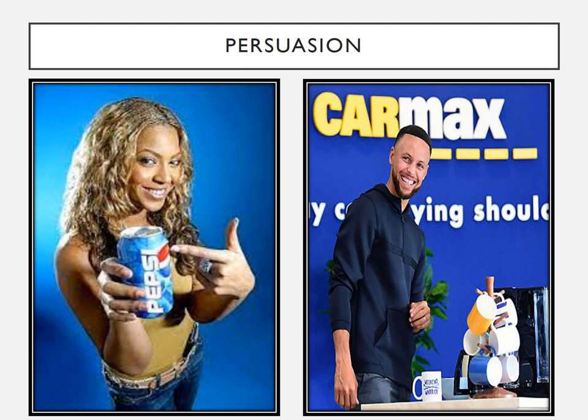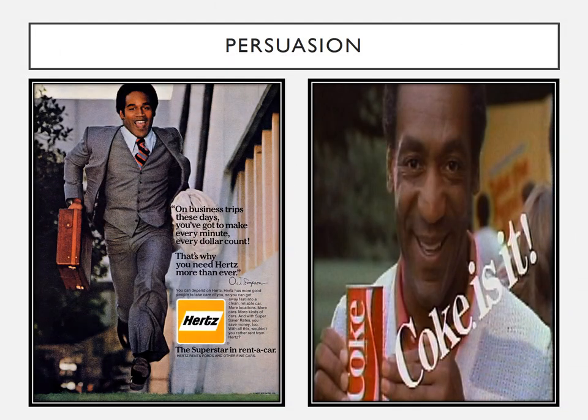There is actually a company that calculates what they call a 'Q score' — a measurement of how likable a celebrity is — and advertisers use these scores to choose spokespeople. Of course, likability can change dramatically. When I was growing up, two of the most beloved celebrities were Heisman Trophy winner O.J. Simpson and comedian Bill Cosby, who were spokespeople for many products. However, things happened that made these two go from likable to unlikable very quickly, and today neither is paid to be a spokesperson for anything.